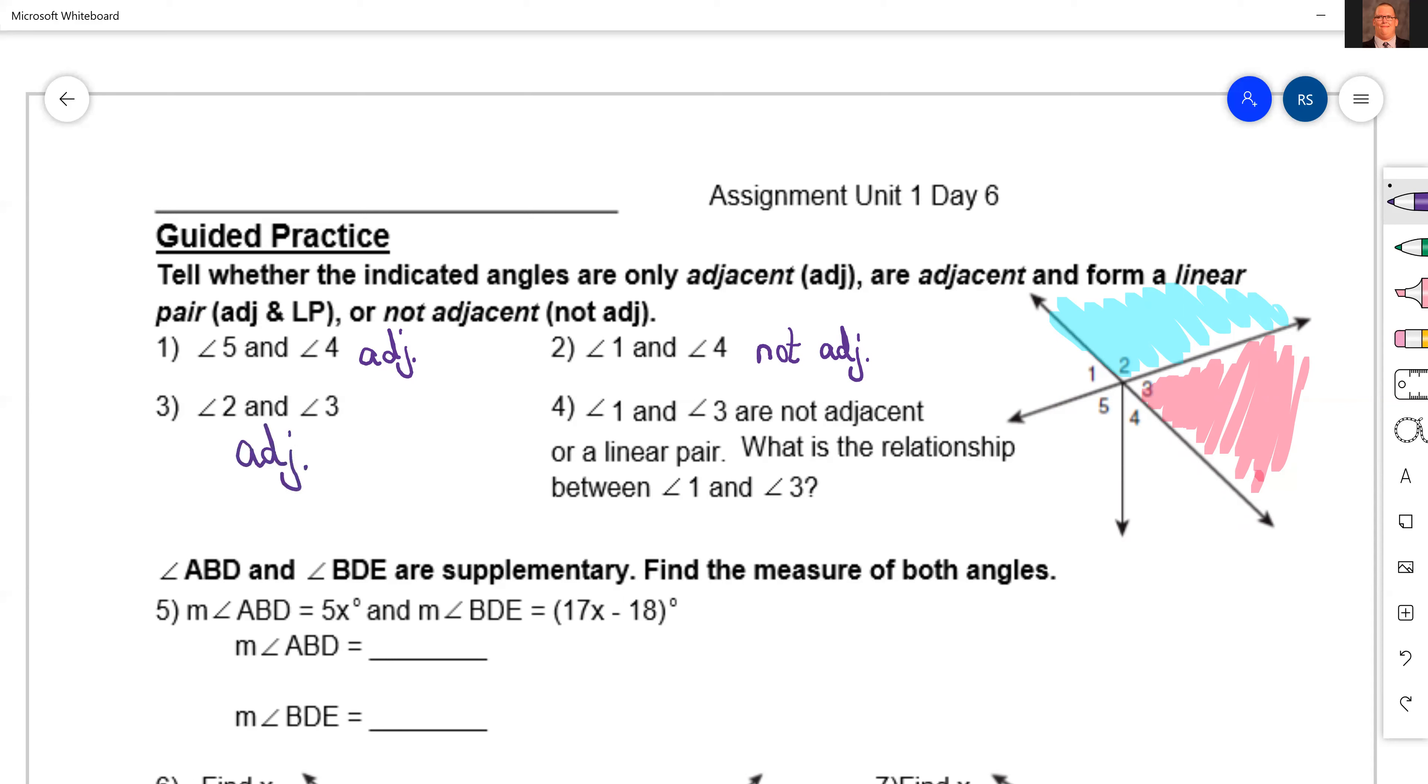Now the sides they don't share, does it make a line? Yep, so it's adjacent and a linear pair.